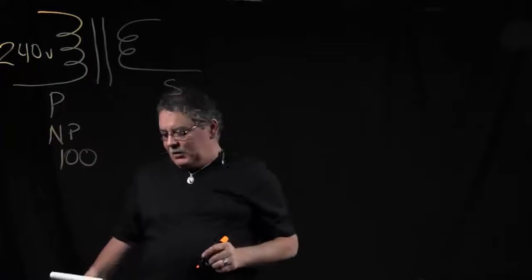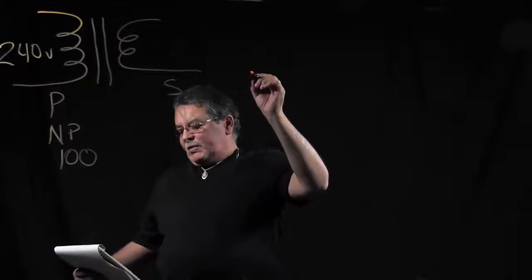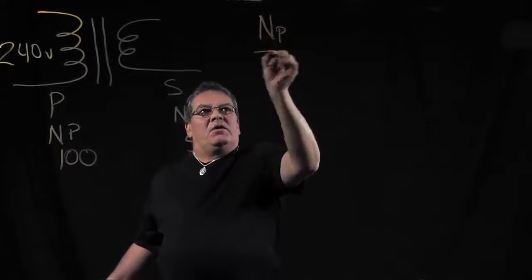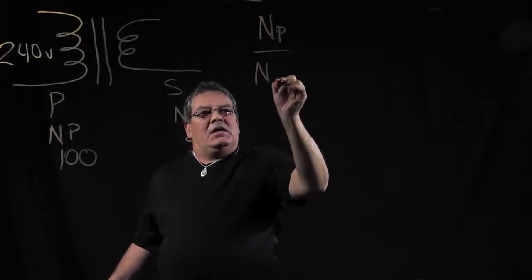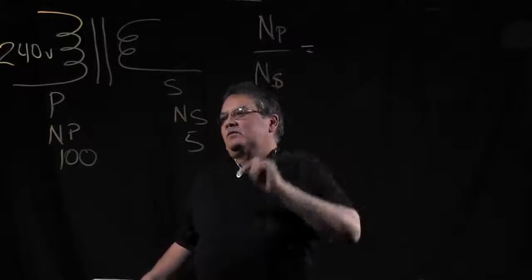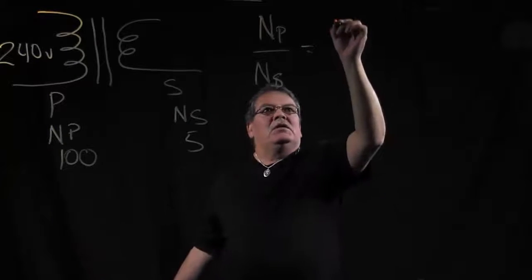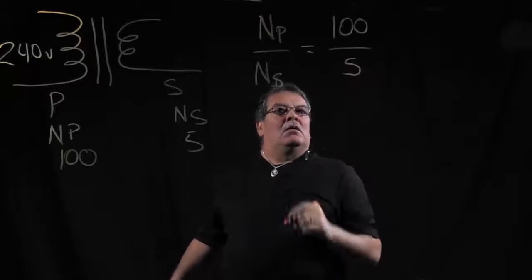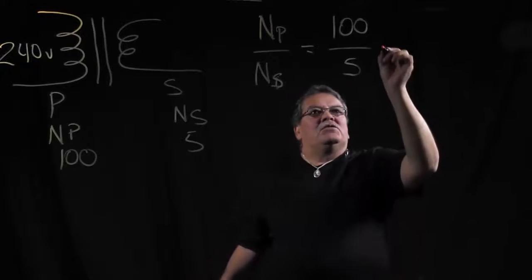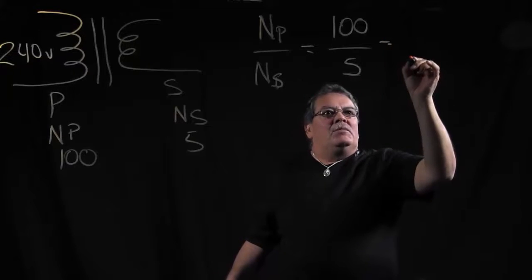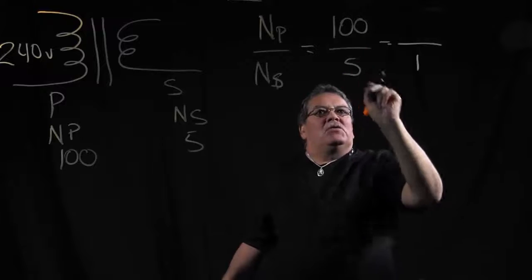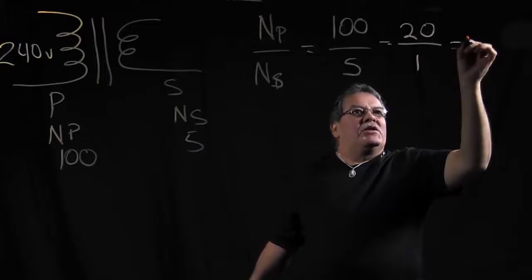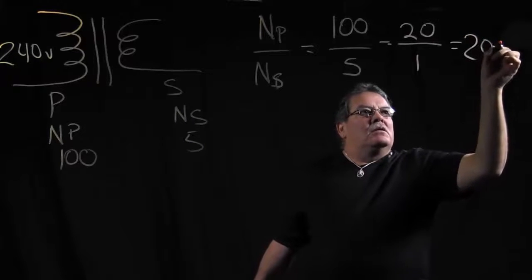OK, now here comes some of the math. So for turns ratio, basically, we already know what our primary is. So our primary is NP over NS. OK, so our turns in your primary is 100. And our turns in our secondary is 5. OK, so we could reduce this down. 5 goes into 5 one time, and 5 goes into 100 20 times. So this would equal a turns ratio of 20 to 1.